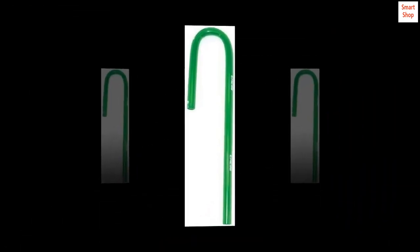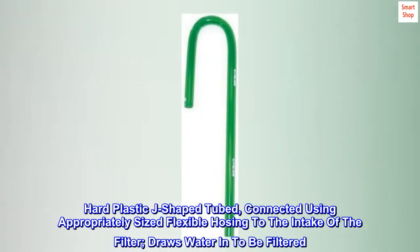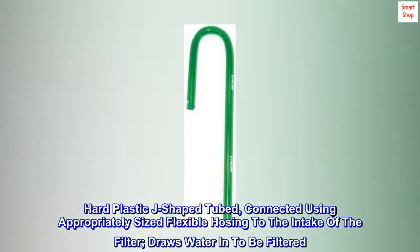Eheim suction pipe. Hard plastic J-shaped tube, connected using appropriately sized flexible hosing to the intake of the filter, draws water in to be filtered. Strainer not included.